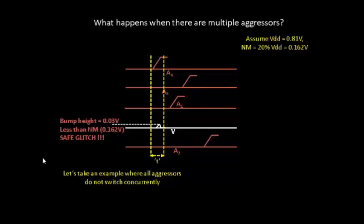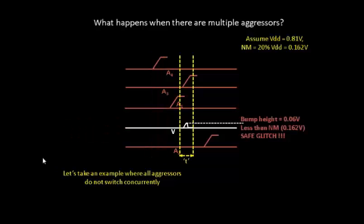Looking into the contribution of the bump height because of this particular aggressor switching, it's 0.06 volts. We'll take the same numbers as we had taken before. This is again less than the noise margin, which is 0.162 volts, and this will fall into the bucket of safe glitch.